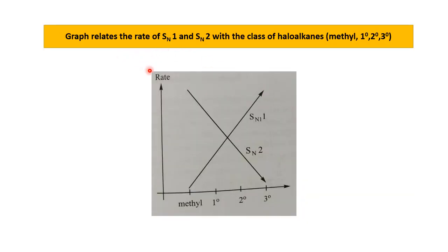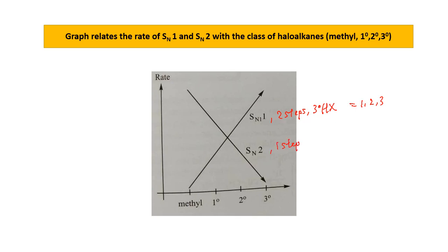This graph relates the rate of SN1 and SN2 to the class of haloalkane. Primary haloalkane goes for SN2 (one-step mechanism); tertiary haloalkane goes for SN1 (two-step mechanism). A helpful memory trick: SN1 + two-step mechanism + tertiary = 1, 2, 3. For SN2: one-step mechanism + primary haloalkane = 2 minus 1 equals 1. So SN1 prefers tertiary and SN2 prefers primary.